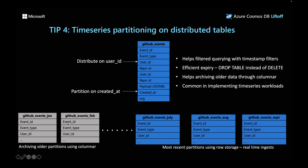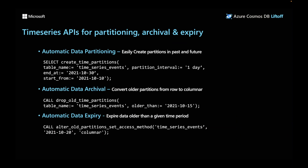This pattern is common in time series workloads where customers complement table distribution with time-based partitioning when a time dimension is present. Cosmos DB for Postgres supports native time series APIs for automatic data partitioning, archival, and expiry. For automatic partitioning, a single command creates partitions in history and in the present. For archival, it automatically makes older partitions columnar. For expiry, running the command drops all partitions older than the specified time.